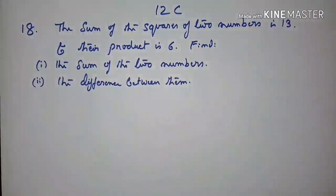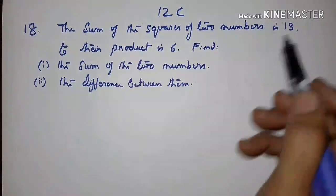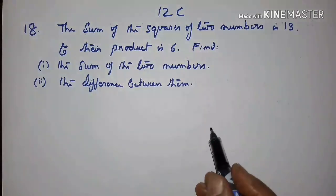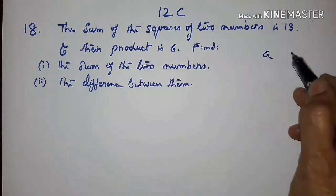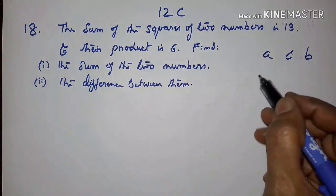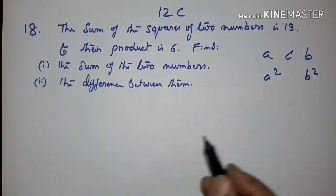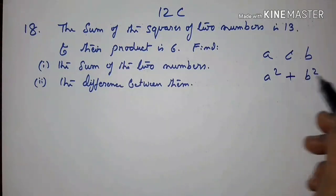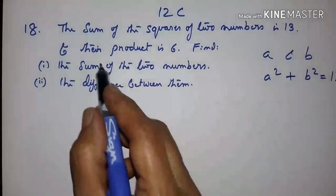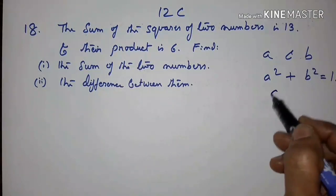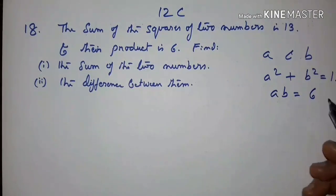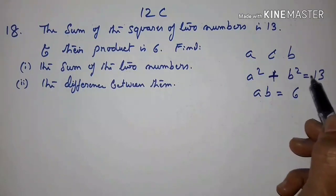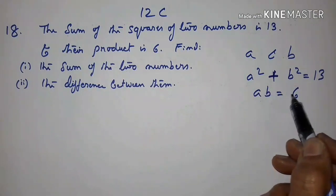18th problem: the sum of the squares of two numbers is 13 and their product is 6. Find the sum of the two numbers and the difference between them. Let the two numbers be A and B. So A squared plus B squared equals 13, and AB equals 6.